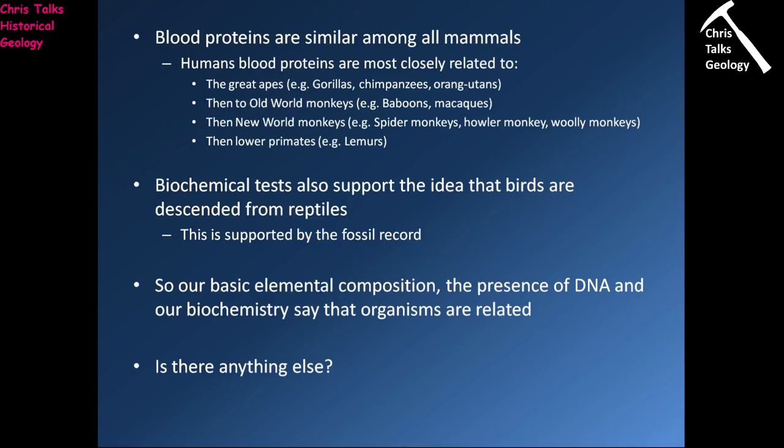We can also use other biochemical tests to look at the relationships between quite different organisms. By comparing the biochemistry of birds and reptiles, we can see that although they are very different animals they are related to each other. We can then support this with evidence from the fossil record. So our basic elemental composition, the presence of DNA, and our biochemistry all say that organisms are related — and that's pretty decent evidence.